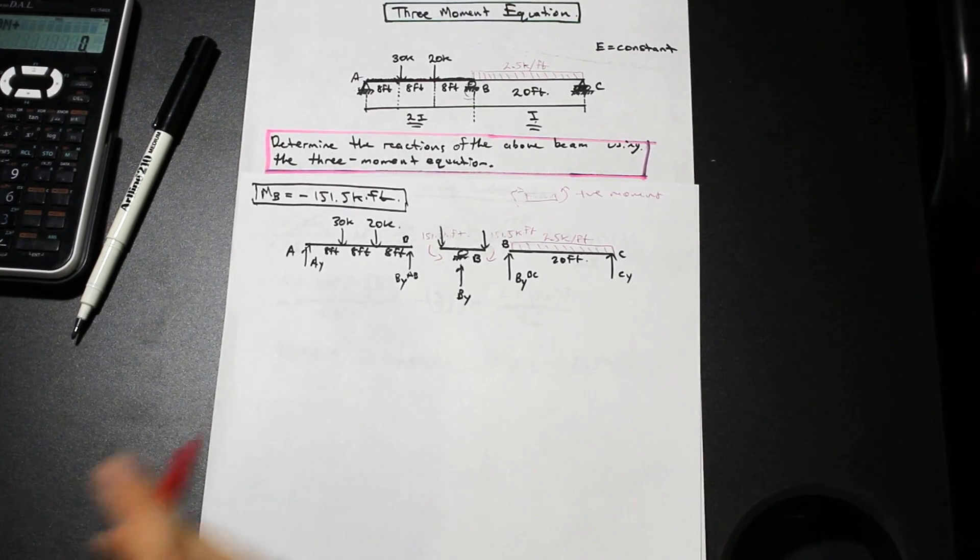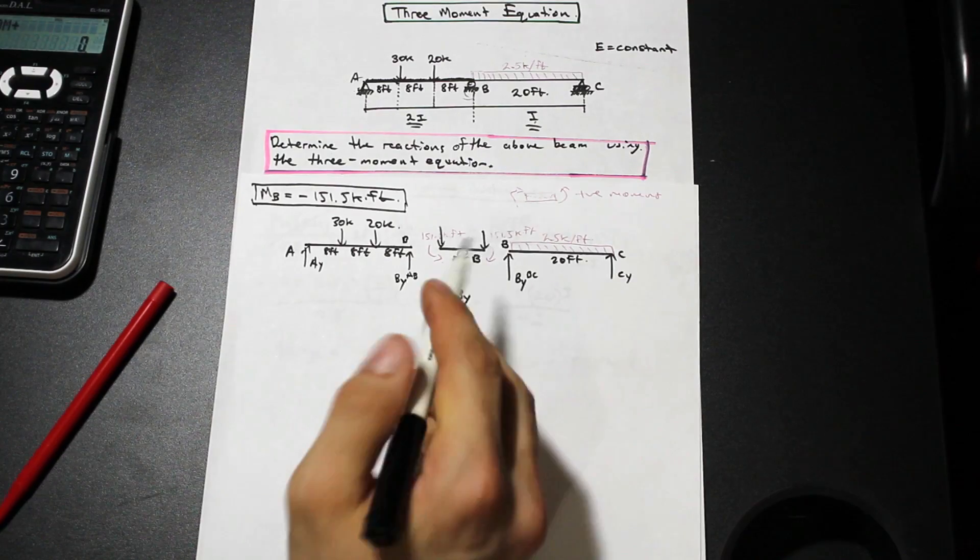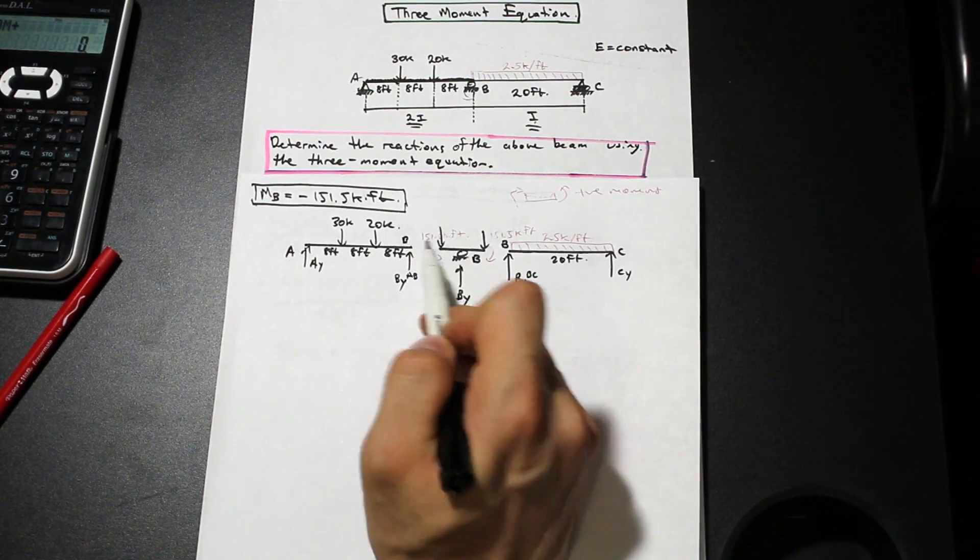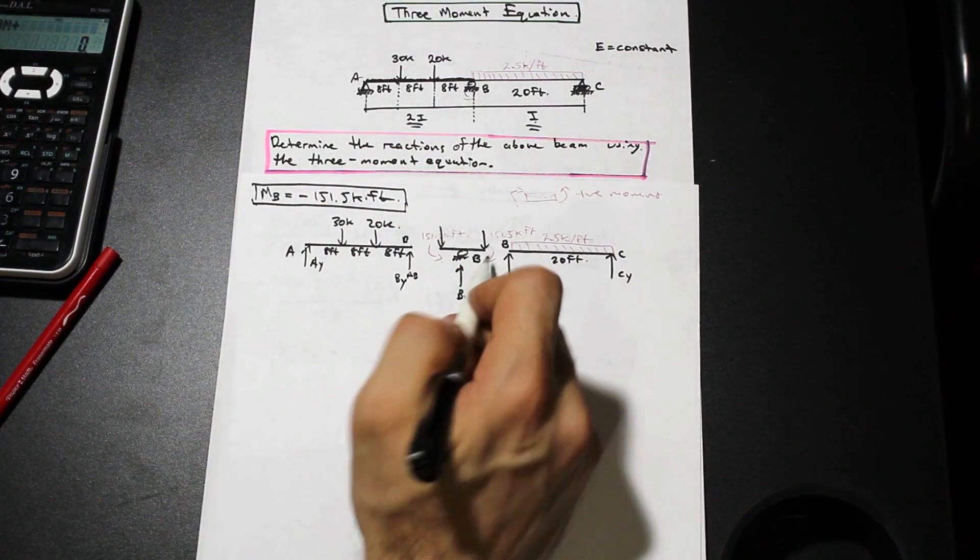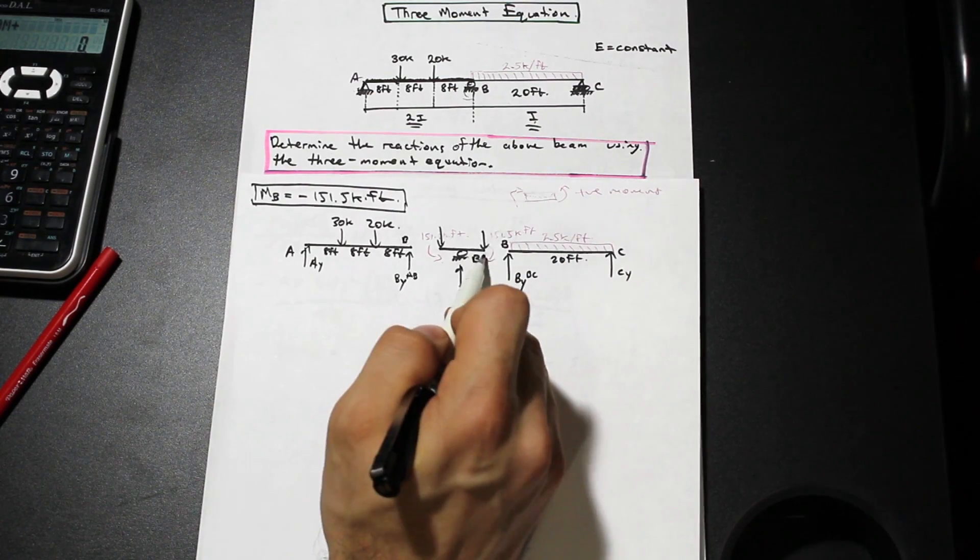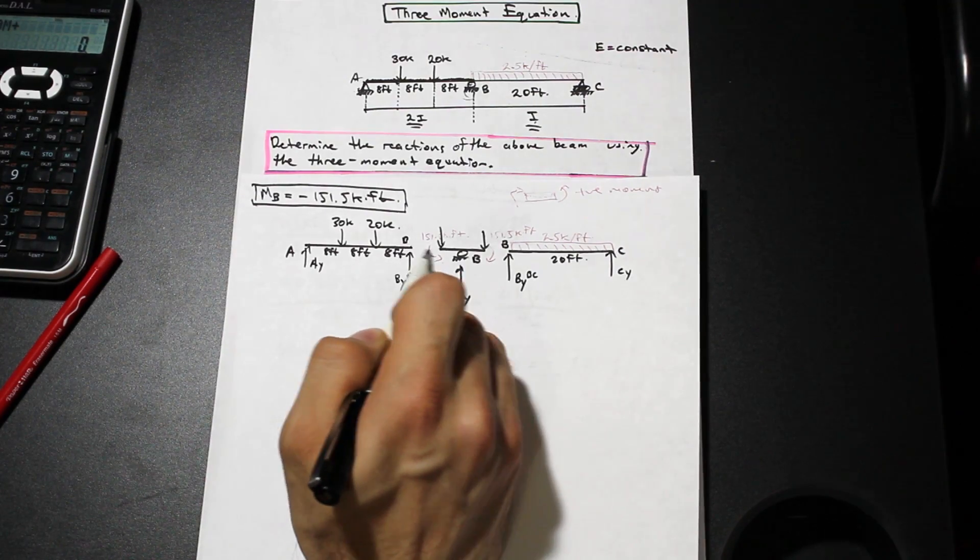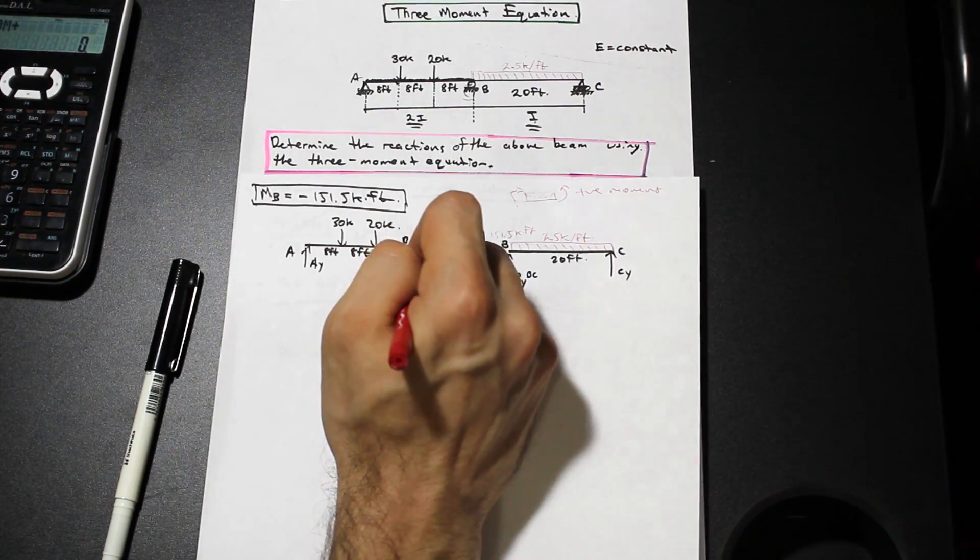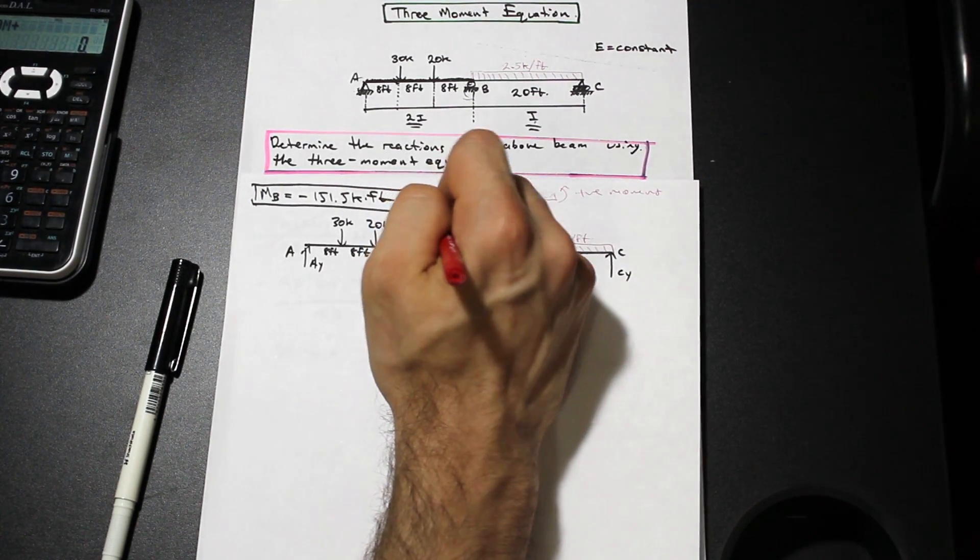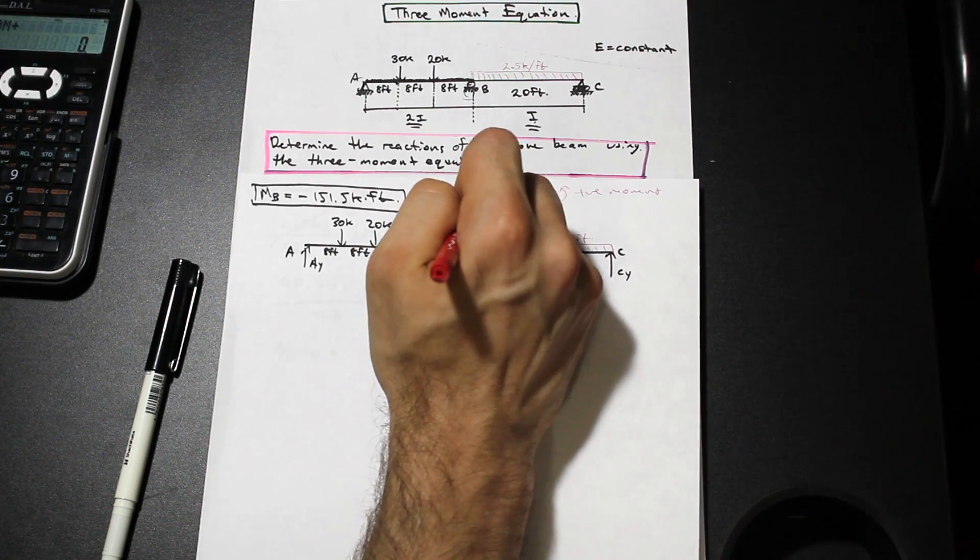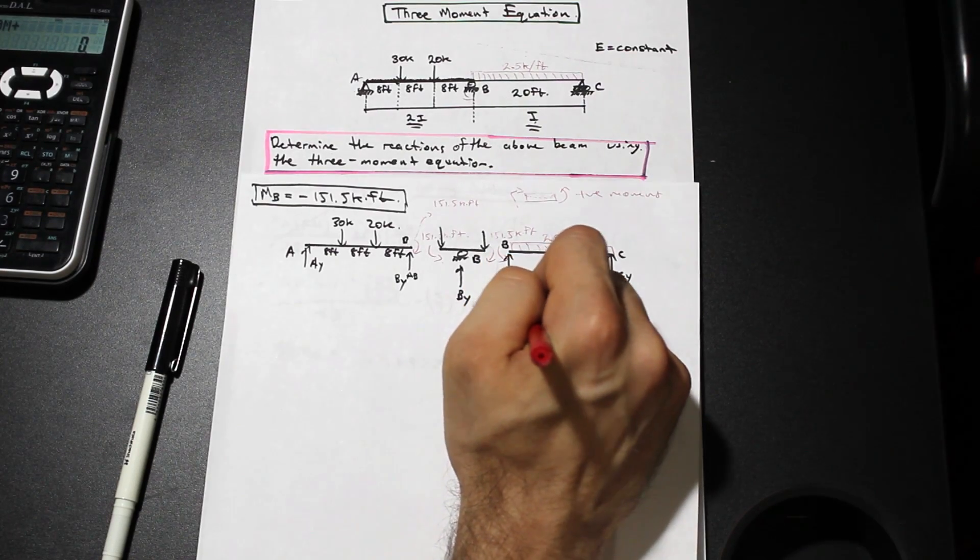What we can do is, as you can see in this diagram here, I cut the beam just before B, the support B, so I separated the beam into three pieces. Now since we have the internal forces here, we know that where we cut the beam there needs to be an equal and opposite force internal force on the other side where we cut it. So that means that here and here we also have 151.5 kip feet, and they're in the opposite direction.